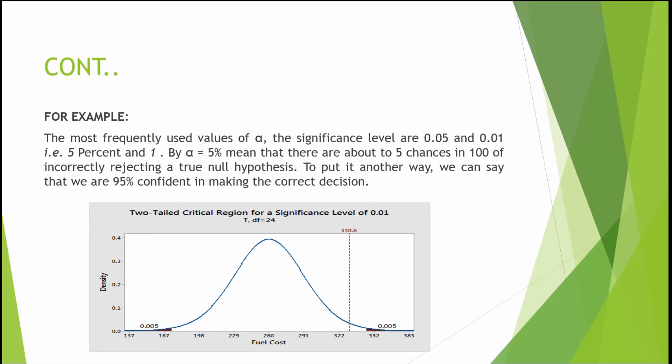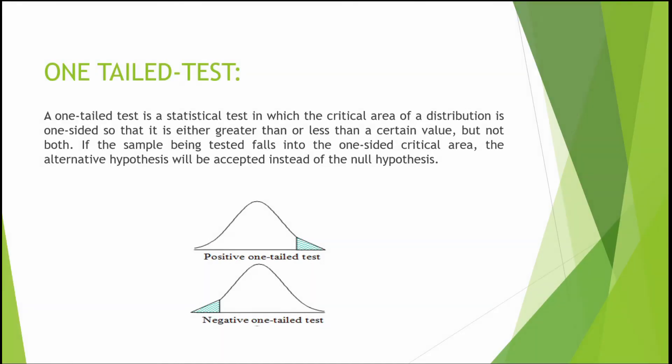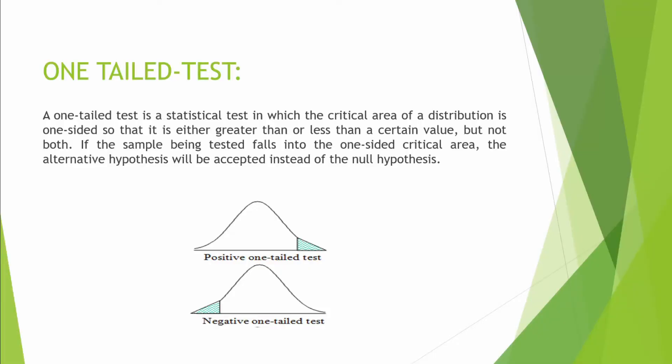A one-tail test is a statistical test in which the critical area of distribution is one-sided, so that it is either greater than or less than a certain value, but not both. If the sample being tested falls into the one-sided critical area, the alternative hypothesis will be accepted instead of the null hypothesis. In a one-tail test, we have one critical area.